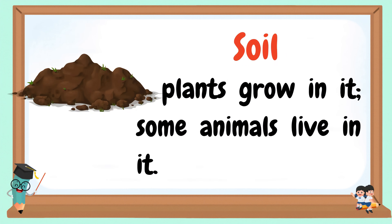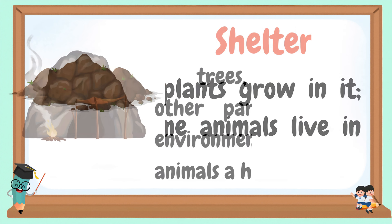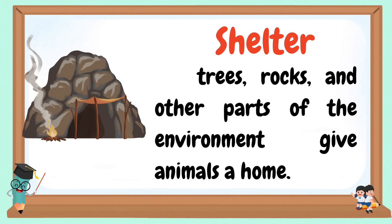Soil: plants grow in it, and some animals live in it. Shelter: trees, rocks, and other parts of the environment give animals a home.